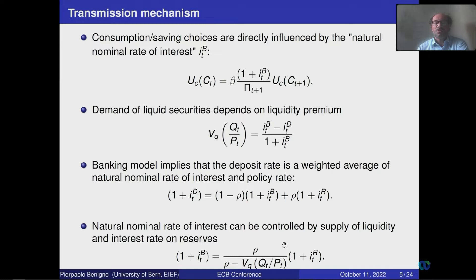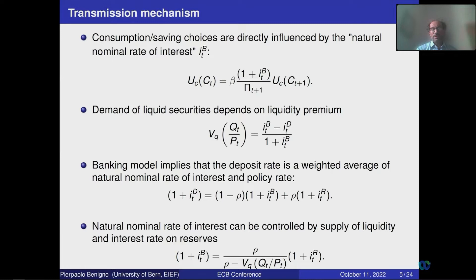To control the rate IB, you need to specify both the interest rate on reserves and the quantity of reserves, which affects liquidity in the economy. This is the new channel. When the marginal utility of Q — BQ — is zero, you are back to the New Keynesian model. So in this model, both the interest rate on reserves and quantity of reserves influence consumption-saving choices and are thus relevant policy tools.